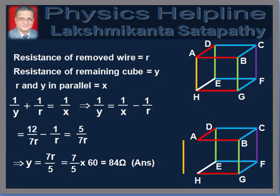Now, for the second part of the question, the wire AH is removed from the network. The resistance of wire AH is equal to R. Let the resistance of the remaining cube be equal to Y. When these two are joined in parallel, we get the complete cube of resistance X. Therefore, we write 1/Y plus 1/R is equal to 1/X. This gives 1/Y is equal to 1/X minus 1/R. Putting X equal to 7R/12, we get 1/Y is equal to 12/(7R) minus 1/R, which is equal to 5/(7R). This implies Y is equal to (7/5)R, which is equal to (7/5) into 60, which equals 84 ohms.